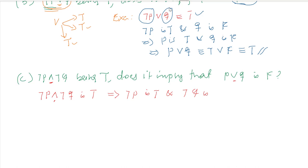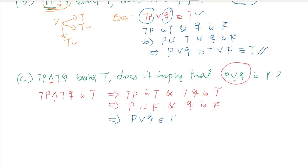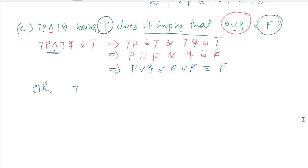If negation of P is true, then P is false. If negation of Q is true, then Q is false. So P or Q has truth value false or false, and false or false is false. This shows that negation of P and negation of Q being true does imply that P or Q is false.